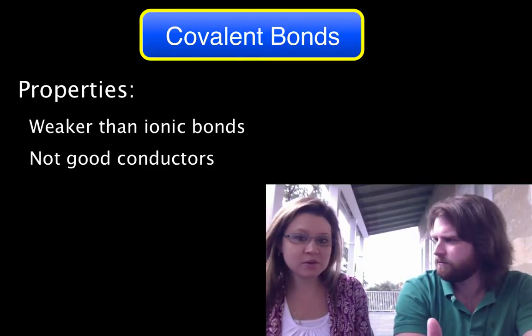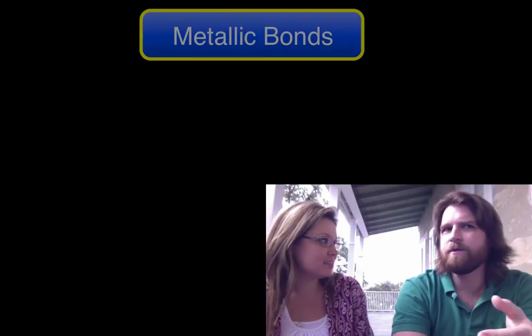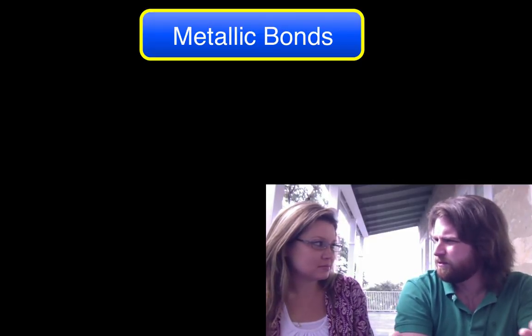So I guess that's pretty much it with types of bonds — we've got ionic and covalent, right? No, we've got one more: metallic bonds. So metals and nonmetals is ionic, nonmetals and nonmetals is covalent. Metallic bonds — what are we talking about here?